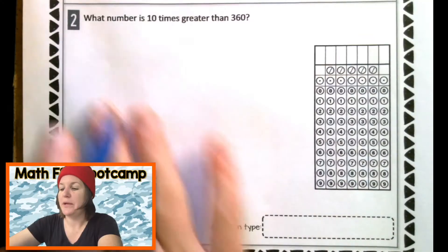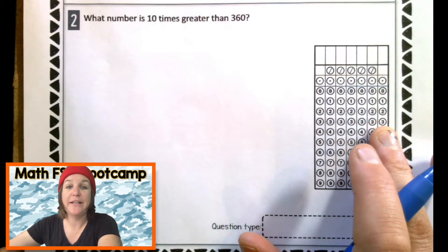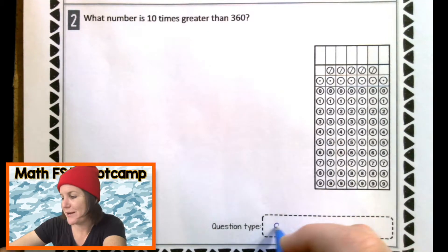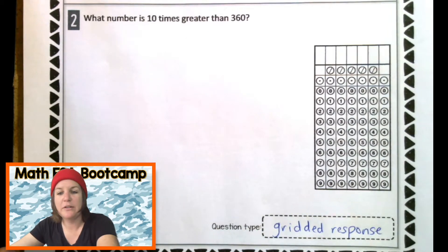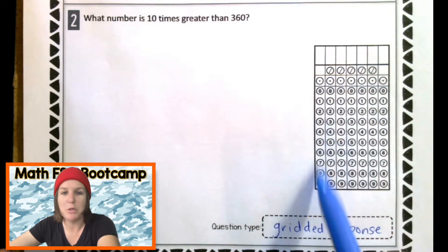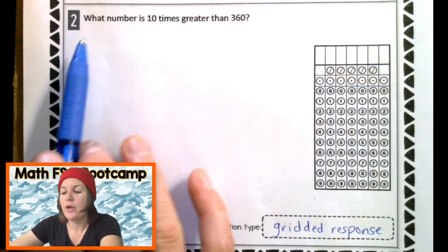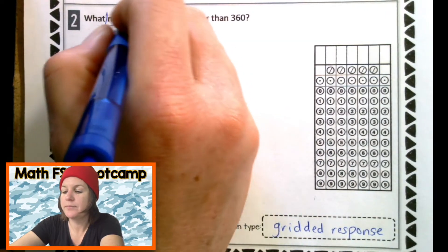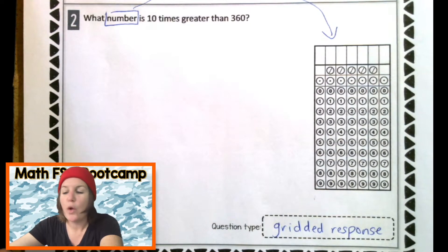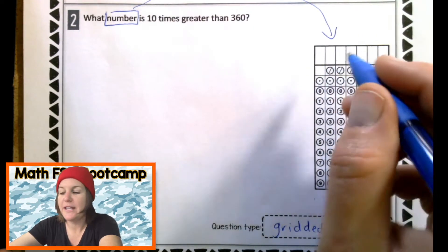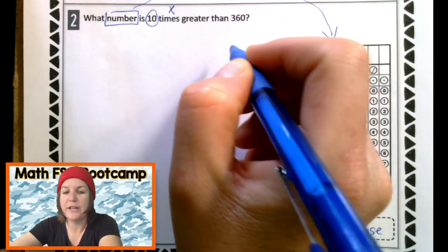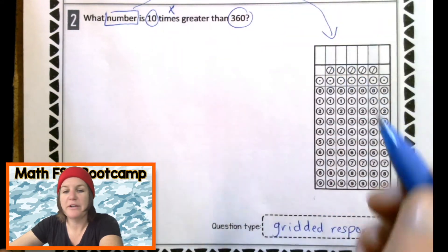Let's check out number two. Doing a quick scan. I see a grid here. So that must mean that this question type is a gridded response. Jot it down. All right. Gridded response. That means my answer is going to go into the grid and bubble it in. Let's read the question. What number?